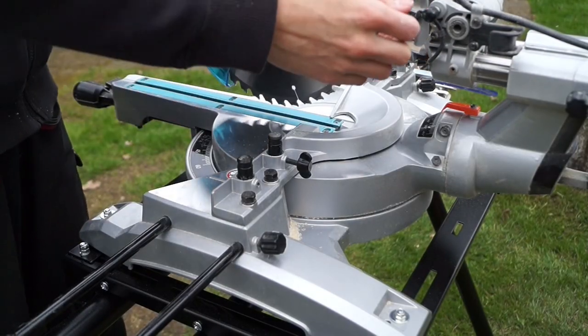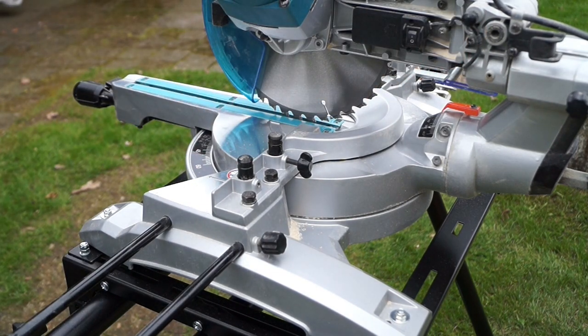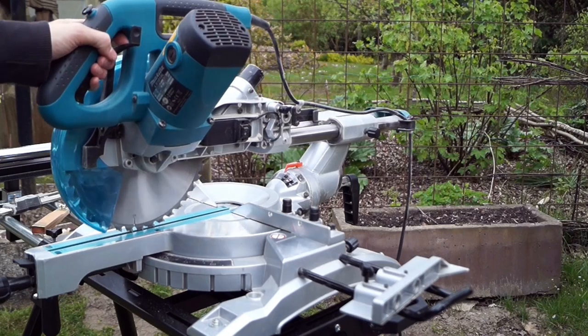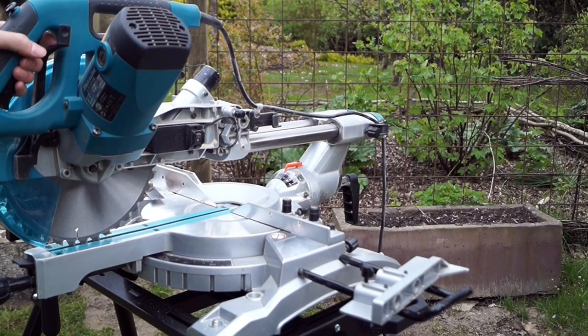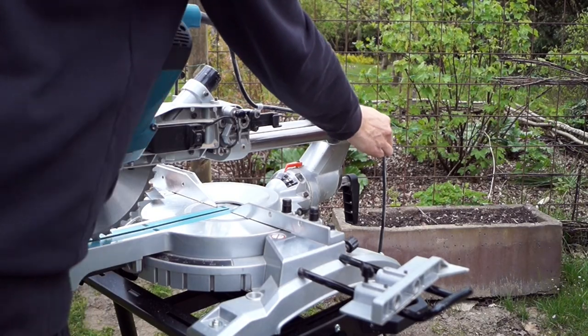If you want to check its vertical squareness, move the saw down and put the stopper pin in so it's locked. Pull the saw to its farthest position to have full access to the zero degree adjusting bolt. You find this where the arm meets the body.